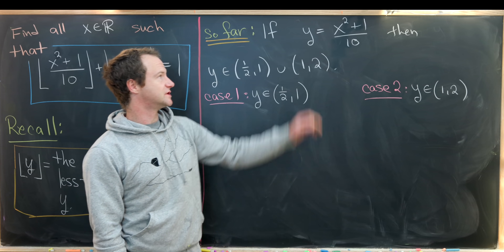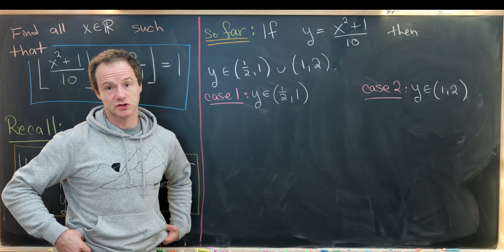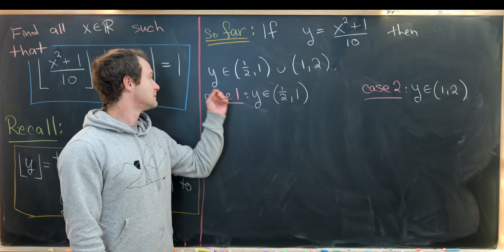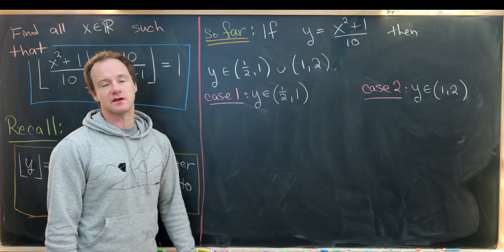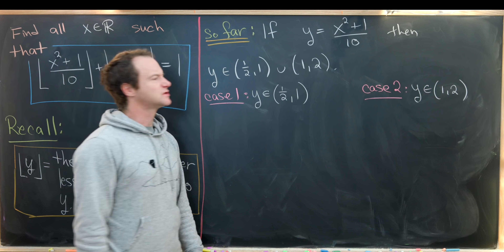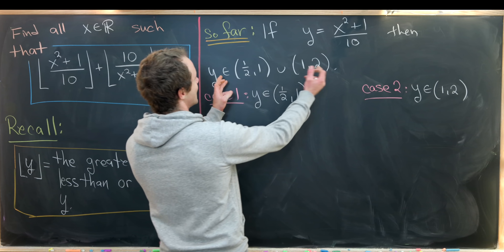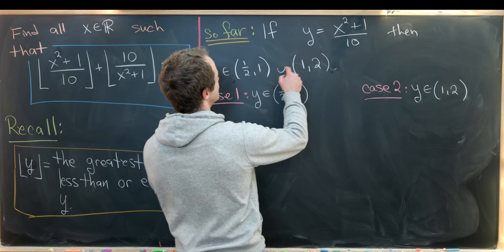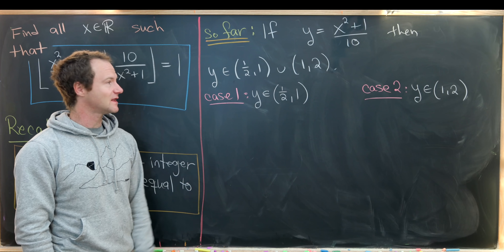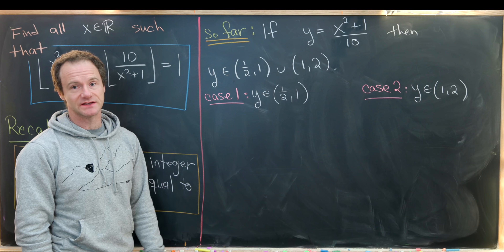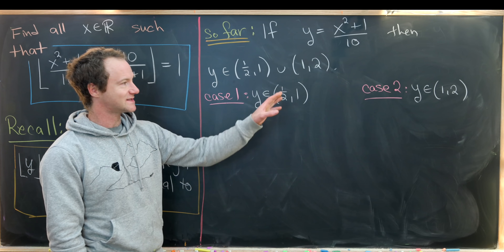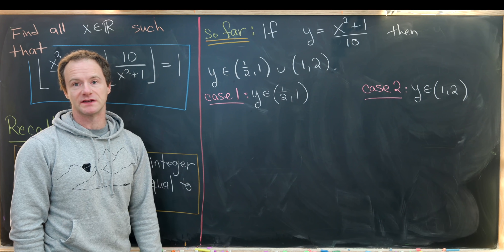To summarize: via the substitution y = (x² + 1)/10, we've determined that y must be on the interval (1/2, 1) union (1, 2). In other words, this is like the open interval (1/2, 2) with the number 1 removed. Now we analyze these two cases to find the corresponding values of x.